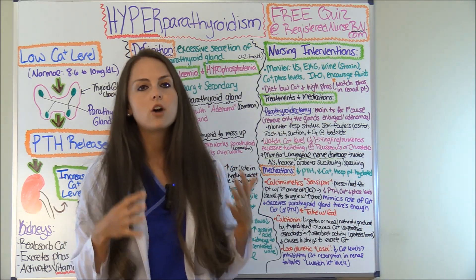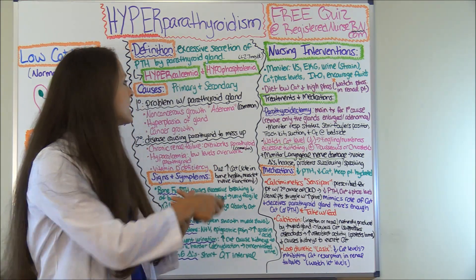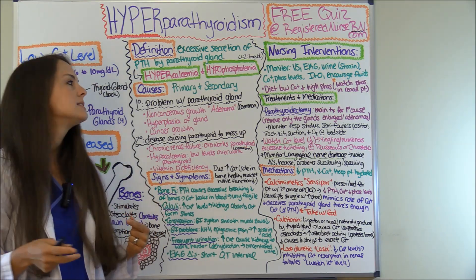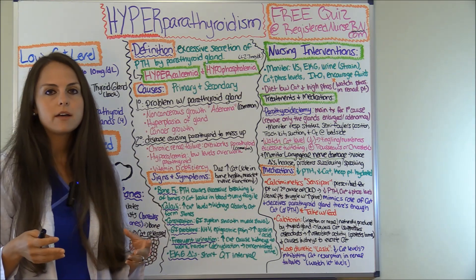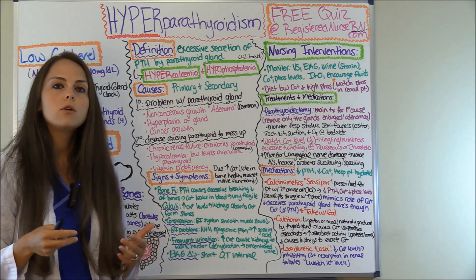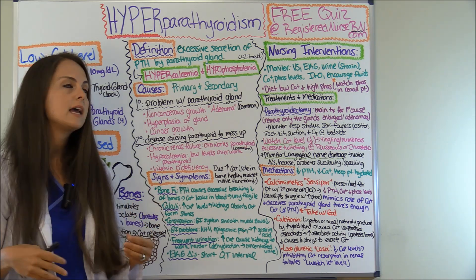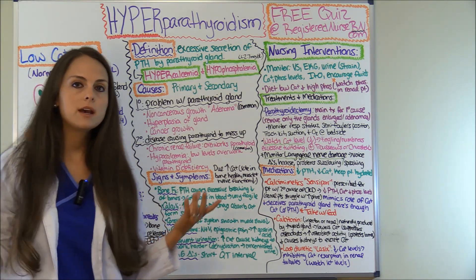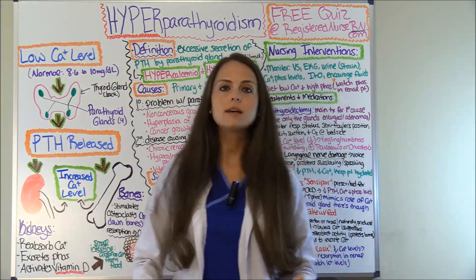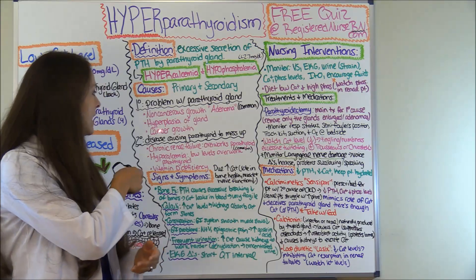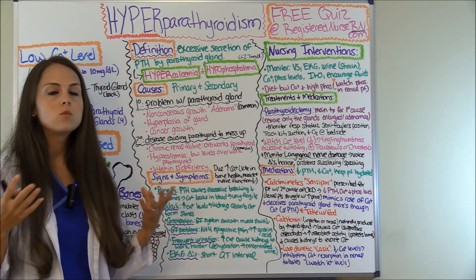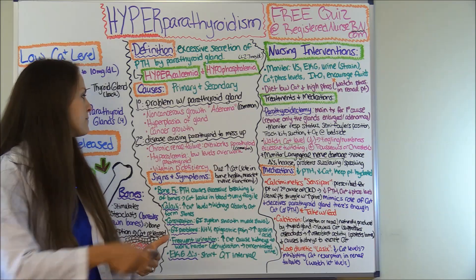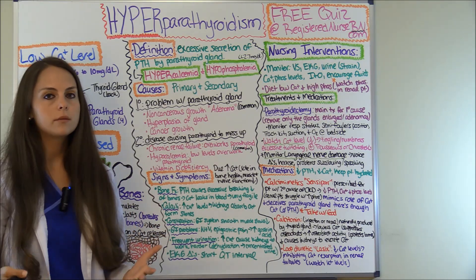There are two subsets of causes: primary and secondary. A primary problem is a problem with the parathyroid gland itself. Things that can cause this include non-cancerous adenomas — which is the most common — where an adenoma on one of the glands causes it to over-secrete parathyroid hormone. Another cause is hyperplasia of the gland, where an enlarged gland over-secretes PTH. Or it can be a cancerous growth on the parathyroid.